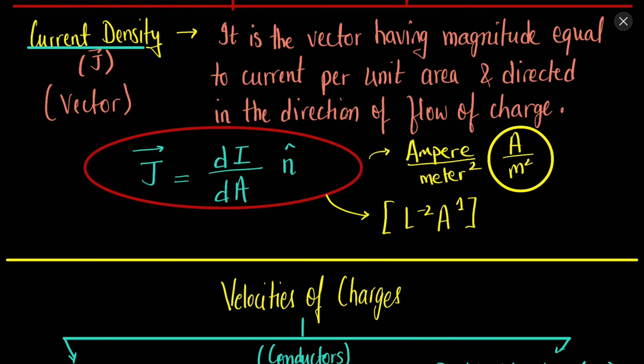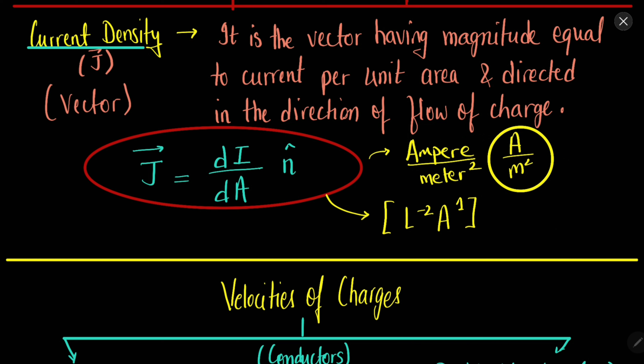Just like charge and charge density or mass and mass density, we have current and current density. Current density is current per unit area. The unit is ampere per meter square. Current density is a vector quantity and its direction is perpendicular to the surface. Current density is the change in current with respect to area, or simply current upon area.